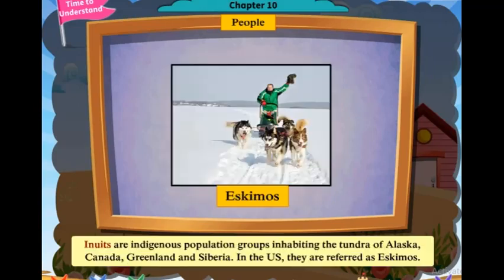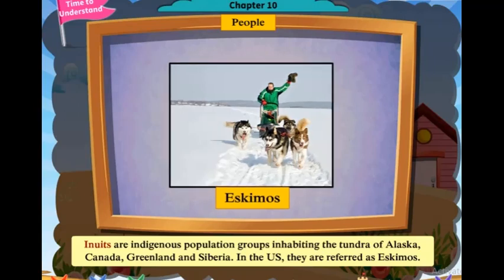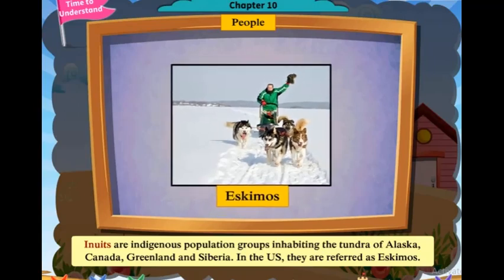Inuits are indigenous population groups inhabiting the tundra of Alaska, Canada, Greenland, and Siberia. In the U.S., they are referred to as Eskimos.